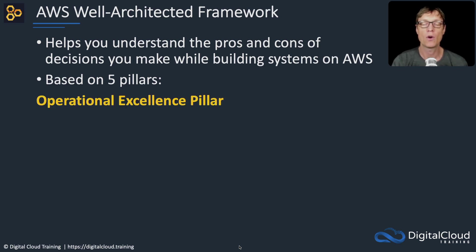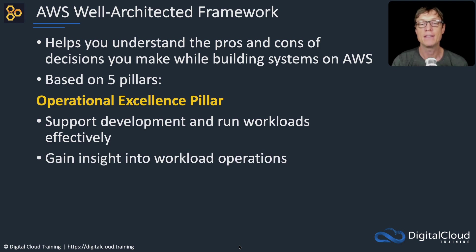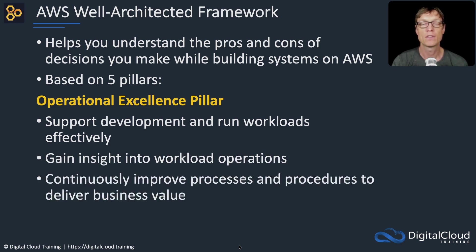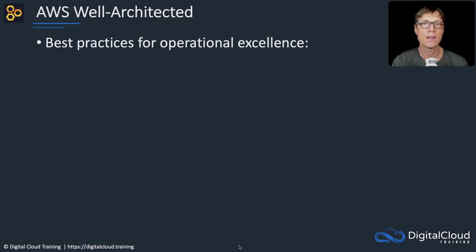Firstly, we have the Operational Excellence pillar. This is about supporting the development of workloads on AWS. It's about gaining insight into your workload operations and improving your processes and procedures to make sure you're delivering value to your business. Now the best practices are where you really need to take notice — these are the things that come up in exam questions, so you may well see these phrases in the answers.